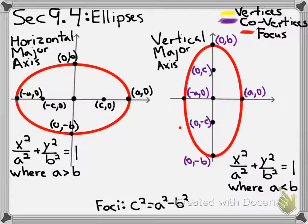In both cases, we have the same basic equation: x squared over a squared plus y squared over b squared equals 1. The horizontal ellipse occurs when a is greater than b, and the vertical one when b is greater than a. We can remember this by noting that the ellipse stretches in the direction of the larger denominator — if a is bigger, it stretches in the x direction; if b is bigger, it stretches in the y direction.